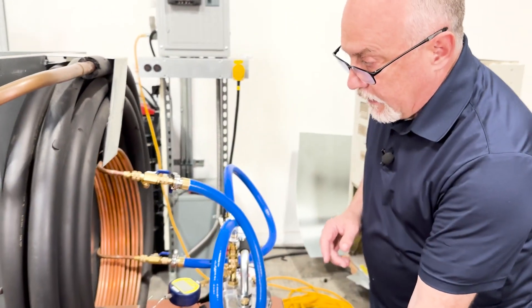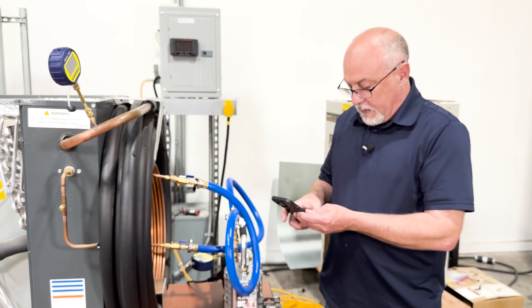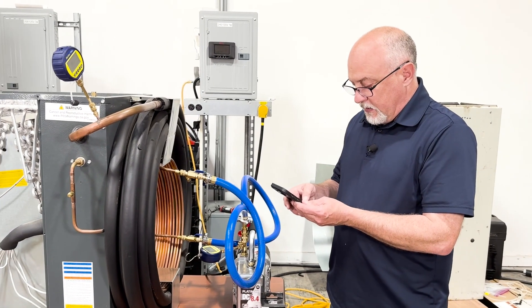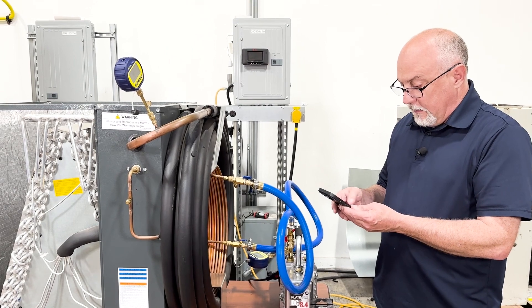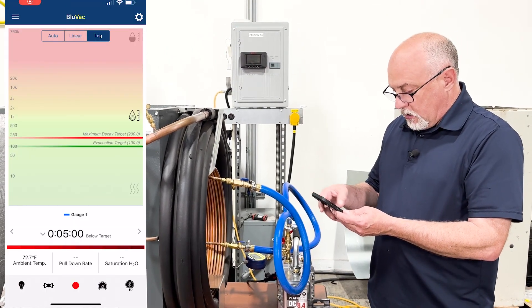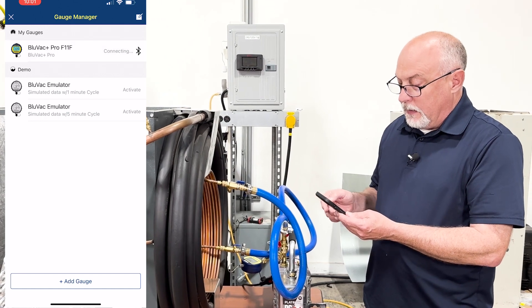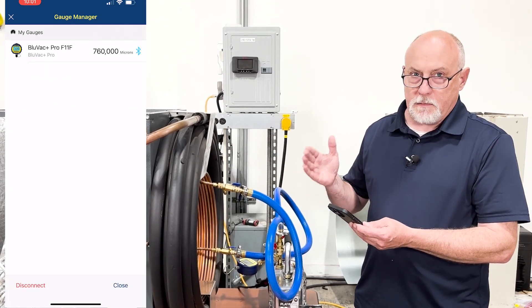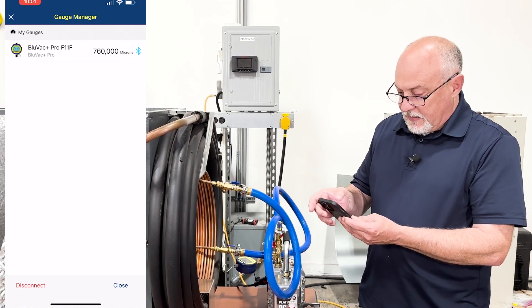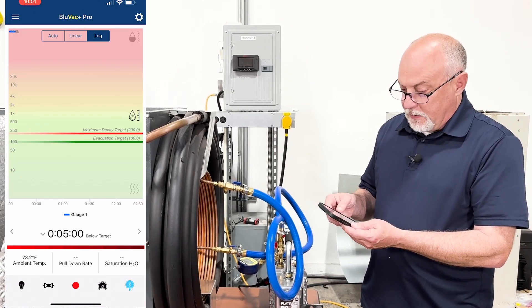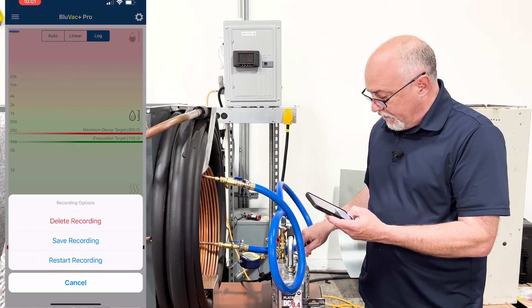So what I'm going to do here is I'm going to get stream on my app so we can actually see this, and then we're going to connect to the BlueVac application. I'm going to click on here and I'm going to select the BlueVac Pro. Now the BlueVac Pro has some decay and leak testing features on there. Once we have this thing connected, I'm just going to close that up and you can see we're starting the graph right now. I'm going to restart the graph.